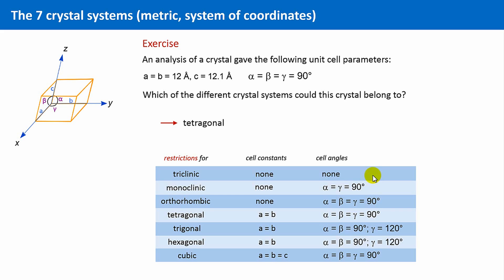it can be tetragonal, it can be orthorhombic, it can be monoclinic or even triclinic. And this means, with this given unit cell parameters, we can't say more. It can be one of these four crystal systems.